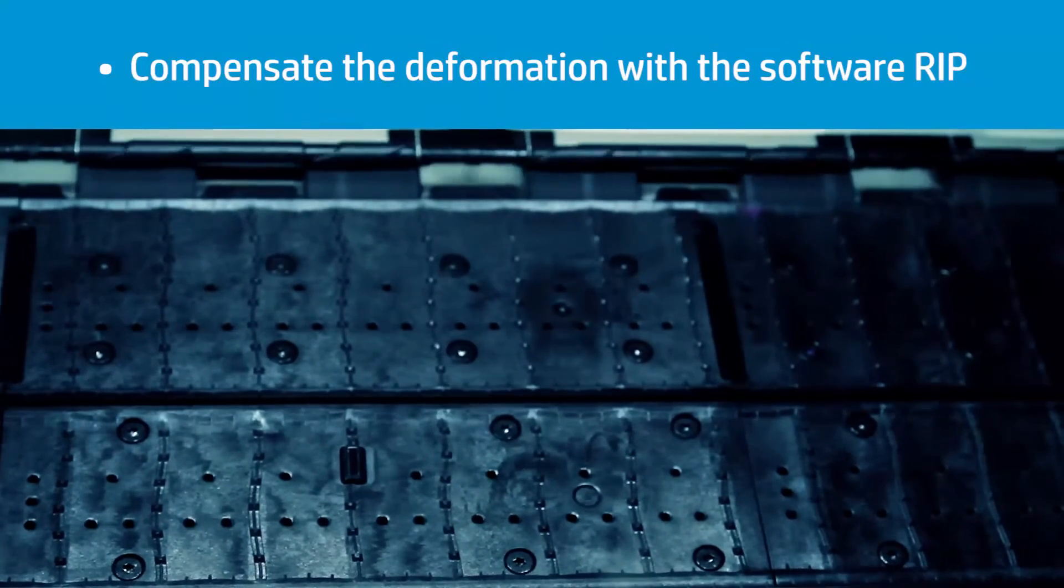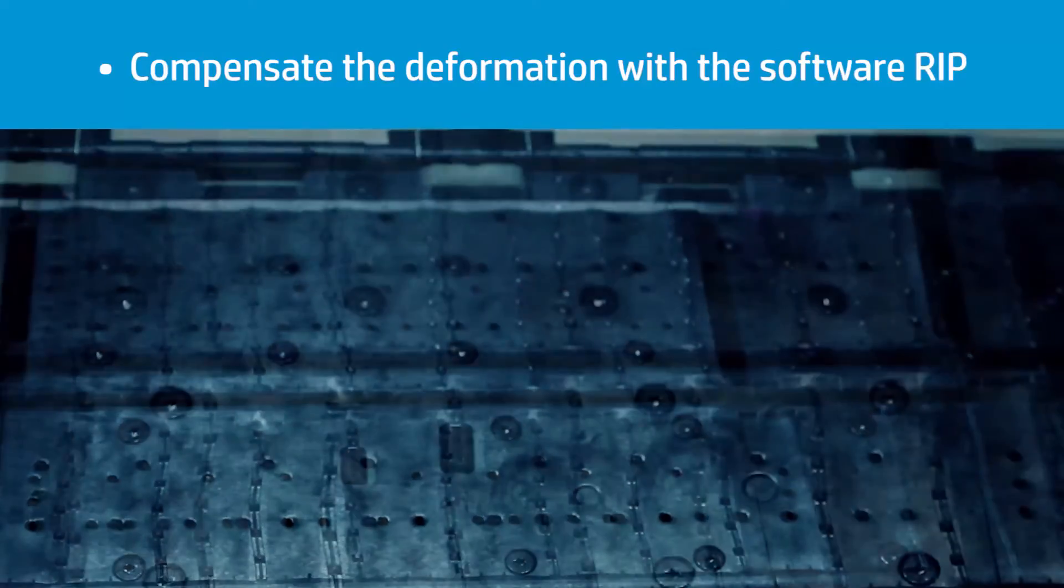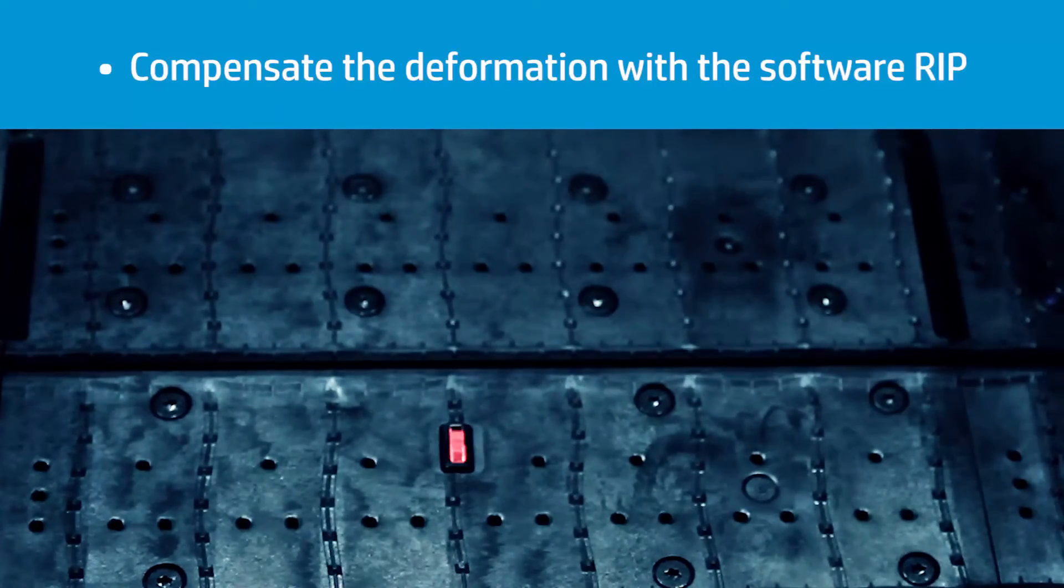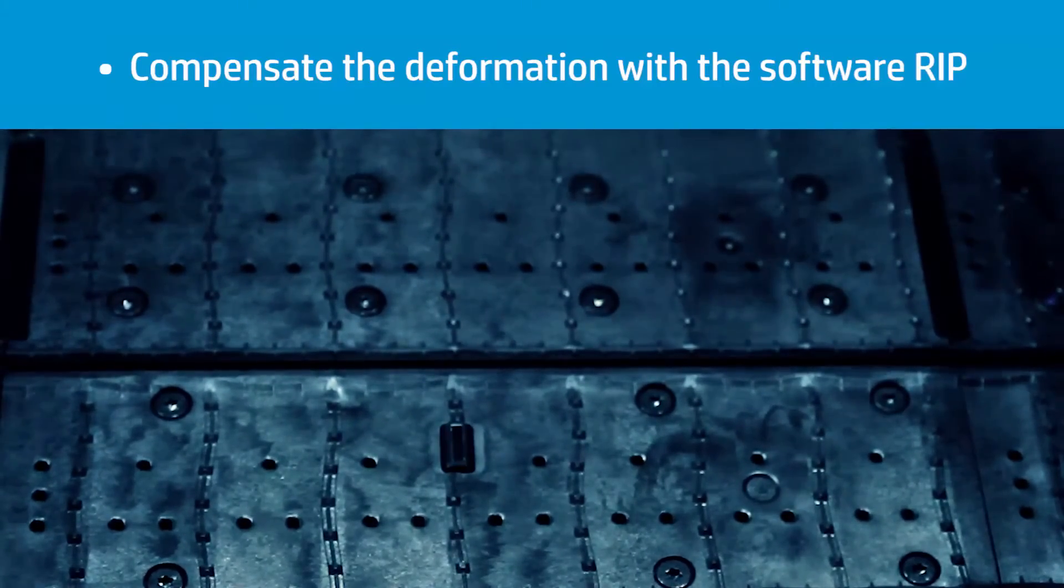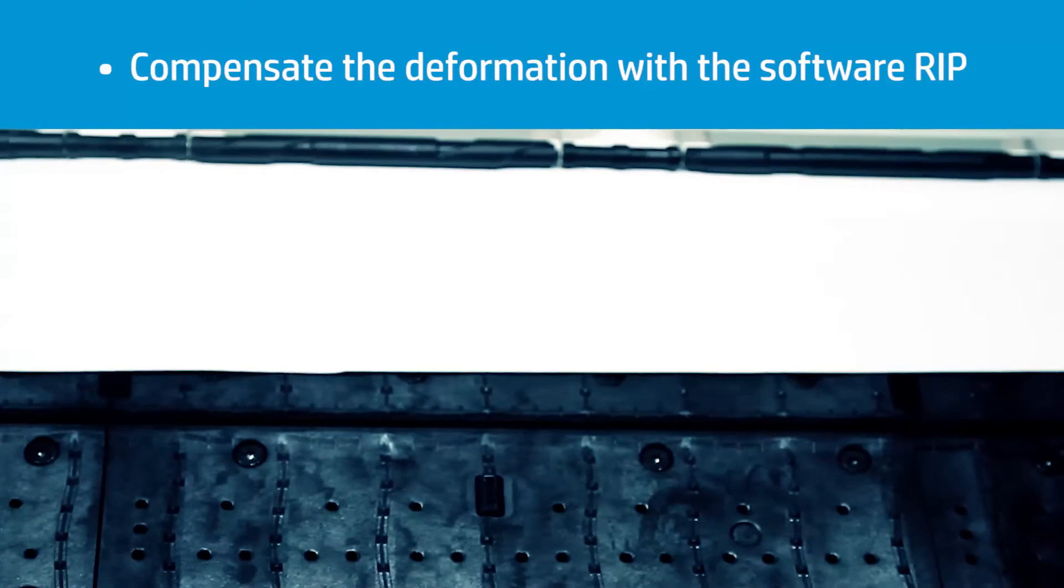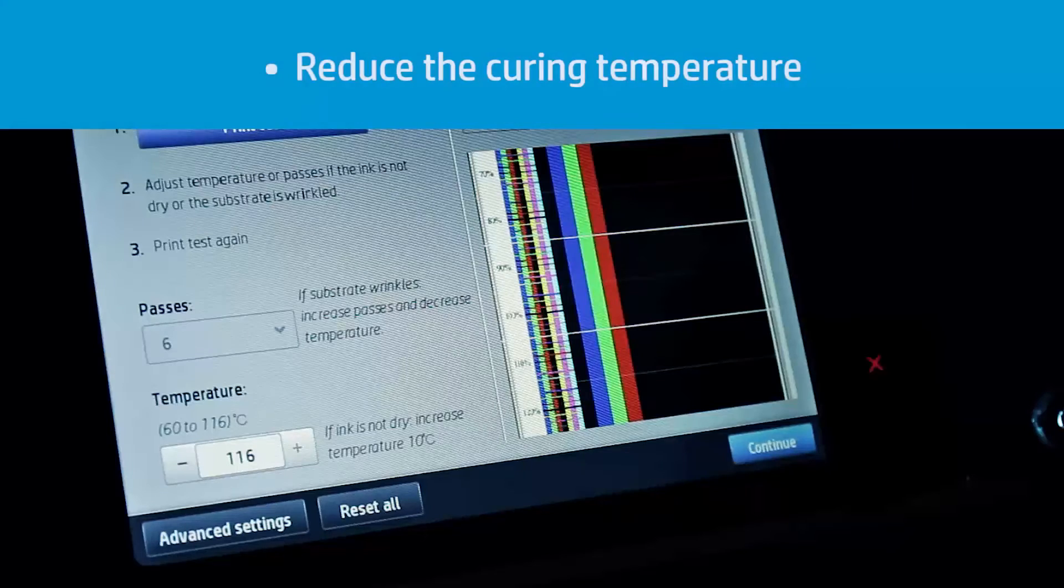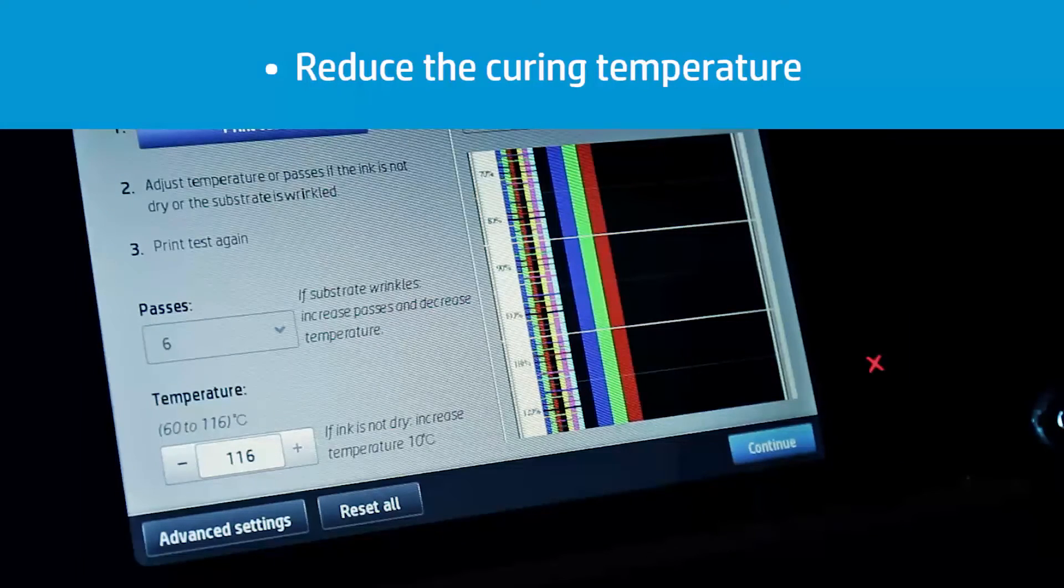If you are printing on an HP Latex 360 printer, make sure the Optical Media Advanced Sensor or OMAS is working while printing. It improves the stability of the length of the prints over time and will make the compensation implemented by the software RIP more effective.